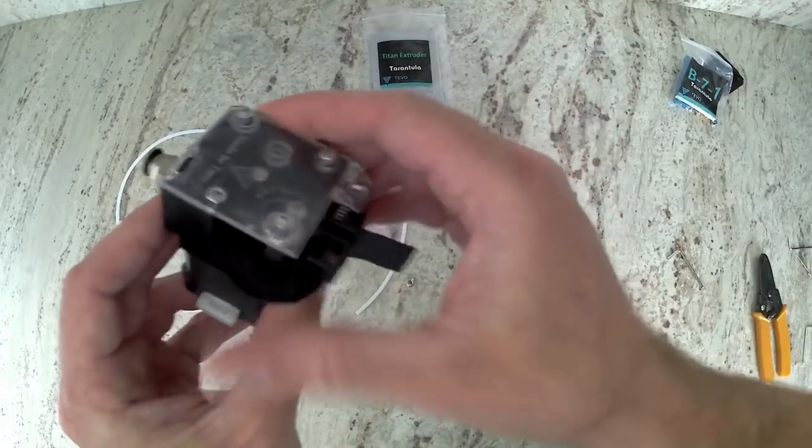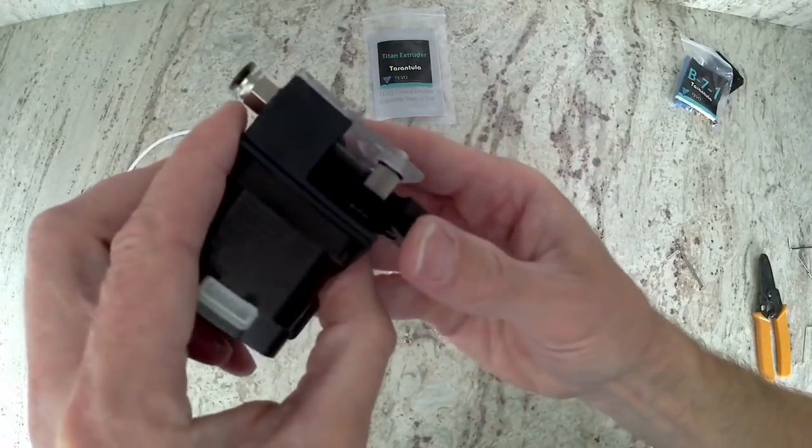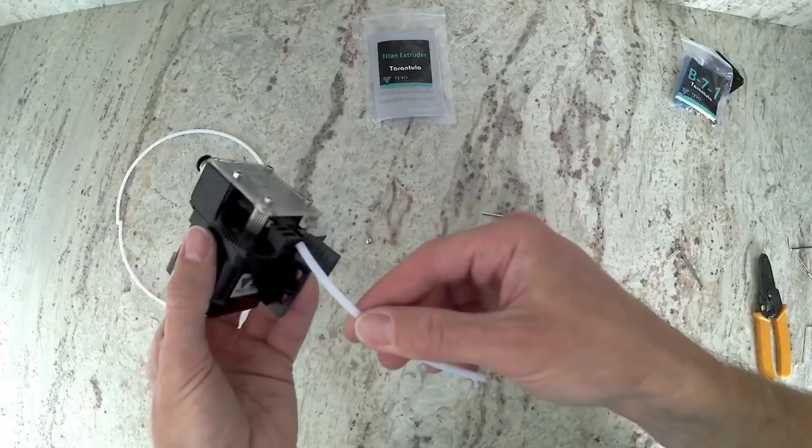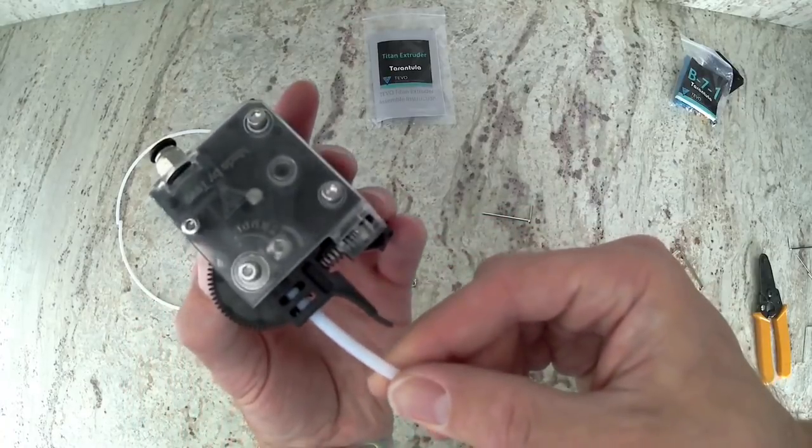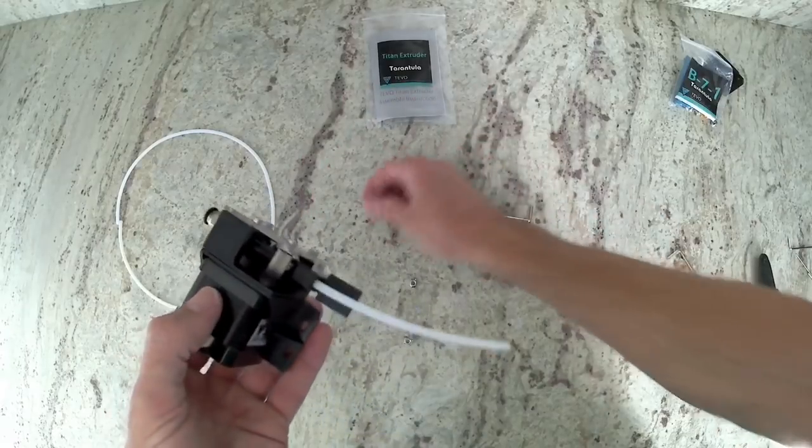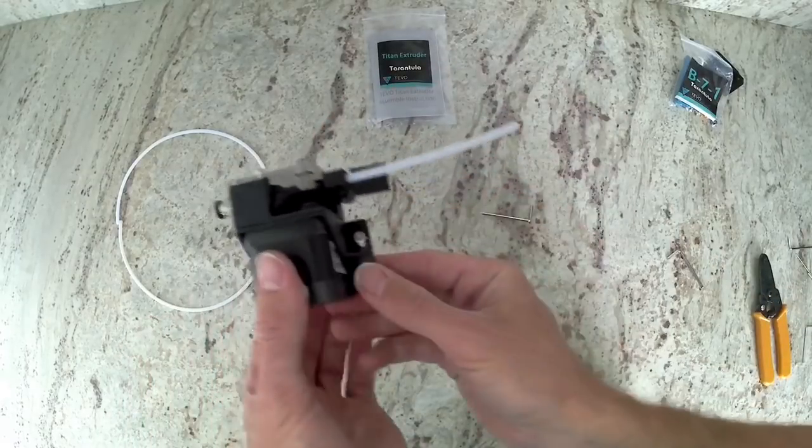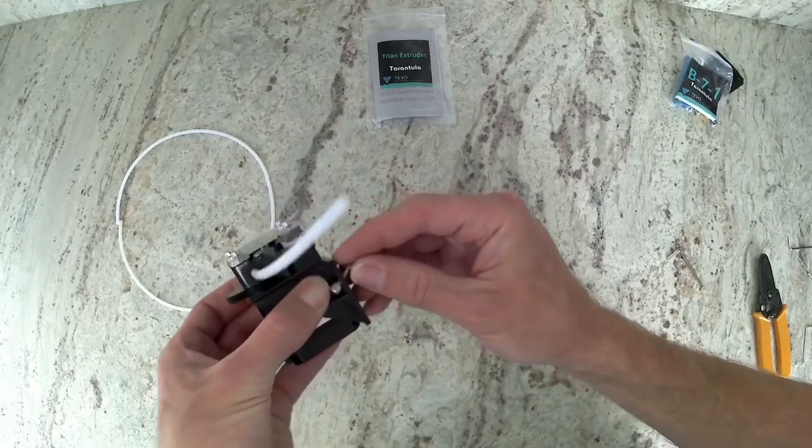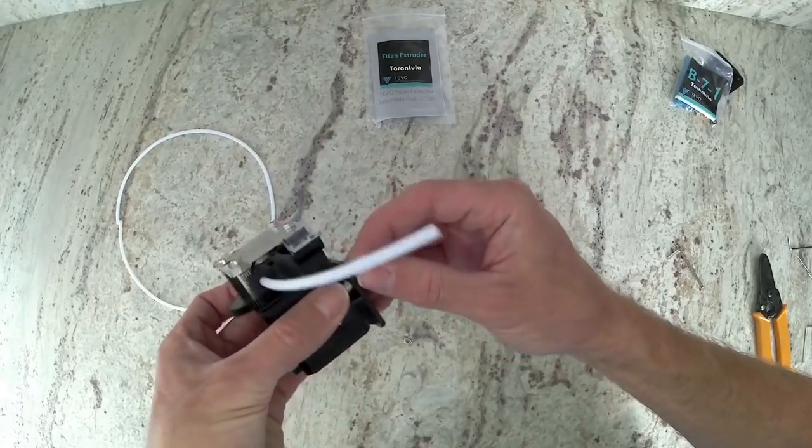Once tight, go ahead and use the thumb wheel and make sure that it turns freely and that you have no obstructions. The PTFE tube is going to go in the bottom, and we're going to install two of the M4 bolts and T-nuts into the extruder. Just put the T-nuts on a couple threads so that we can tighten them down later.